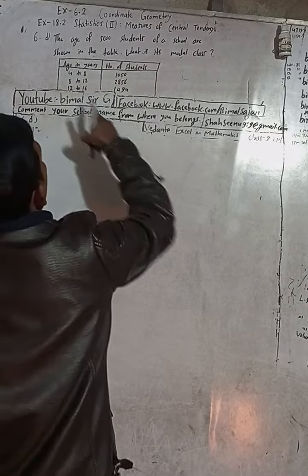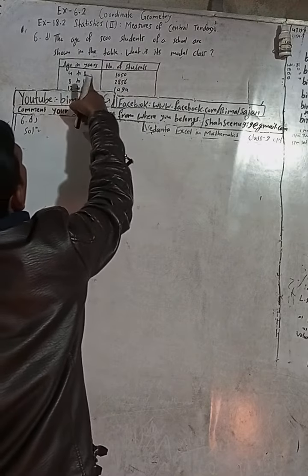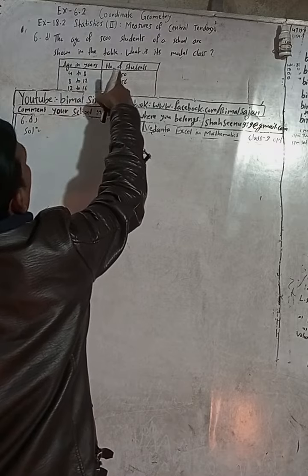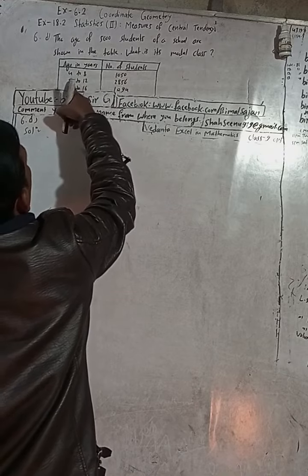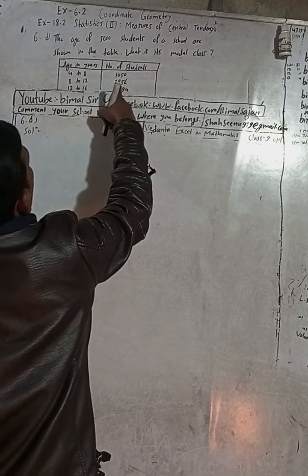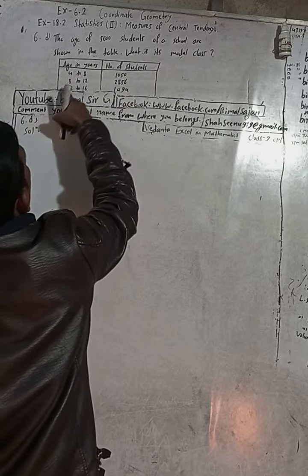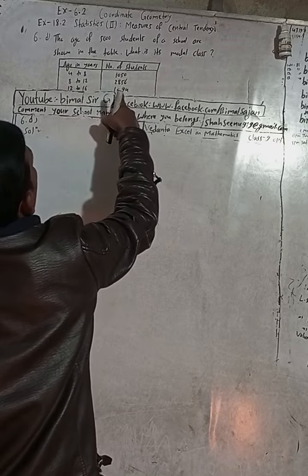Here's the table: Age in years 4 to 8, number of students 1050. From 8 to 12, number of students 2856. From age 12 to 16, number of students 1094.